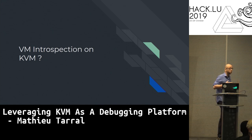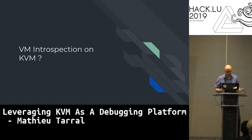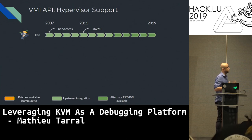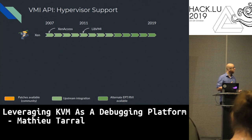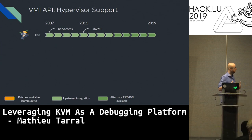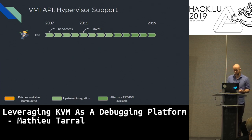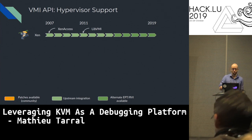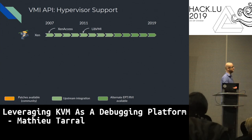Let's first review what VMI APIs are available on KVM — a bit of history. This is a timeline. In orange you have patches available from the community; in green, upstream integration. The alternate EPT VMI API is available, which is the best API. For Xen, VMI introspection was always available since a long time — you can see it in famous projects like XenAccess or LibVMI.